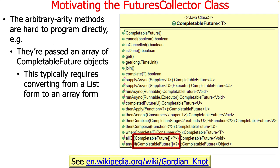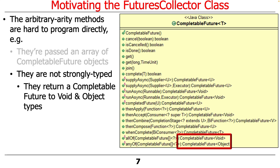These methods are passed an array of CompletableFuture objects, which usually and awkwardly requires us to convert from a list form to an array form - really annoying, but that's just the way it works. Another issue is that these are not strongly typed. You could have an array of any types of CompletableFuture objects, and that's why allOf and anyOf return a CompletableFuture of void or object, because the underlying implementation doesn't know what it's waiting on. So those are two problems: you have this array, and it's not strongly typed.